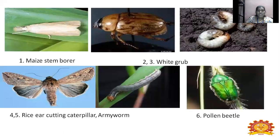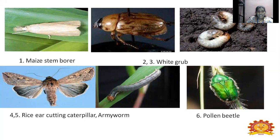The images of major pests: the first one is the maize stem borer moth. The second and third images show white grub — the adult white grub and the immature larval or grub stage, which is the immature stage of white grub in the Coleoptera family. The fourth and fifth images show armyworm, Mythimna separata — the rice ear-cutting caterpillar — showing the adult and how the larva will be. The last image is the flower beetle or pollen beetle. These are all the major insect pests of maize.